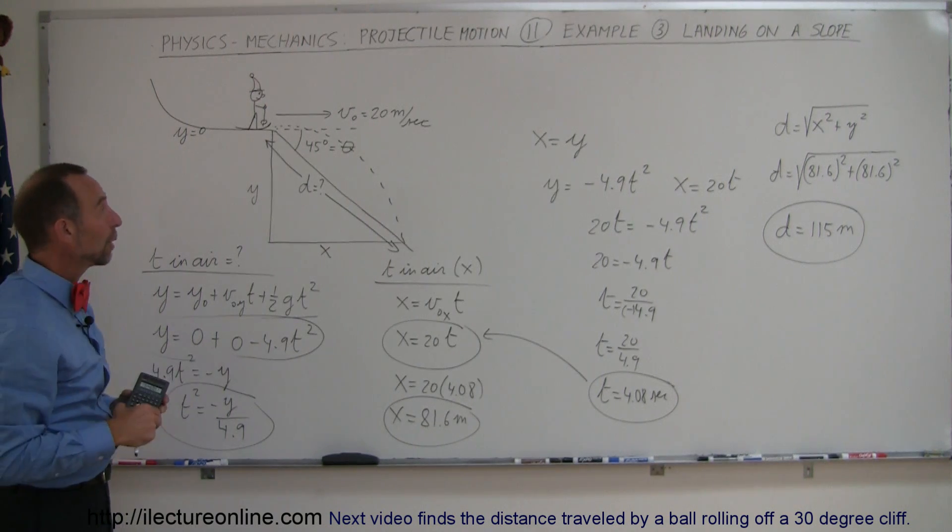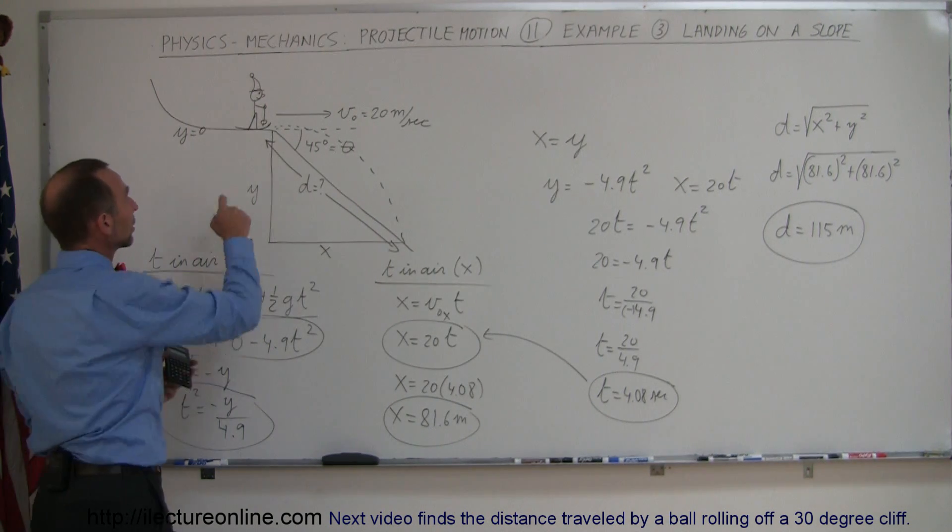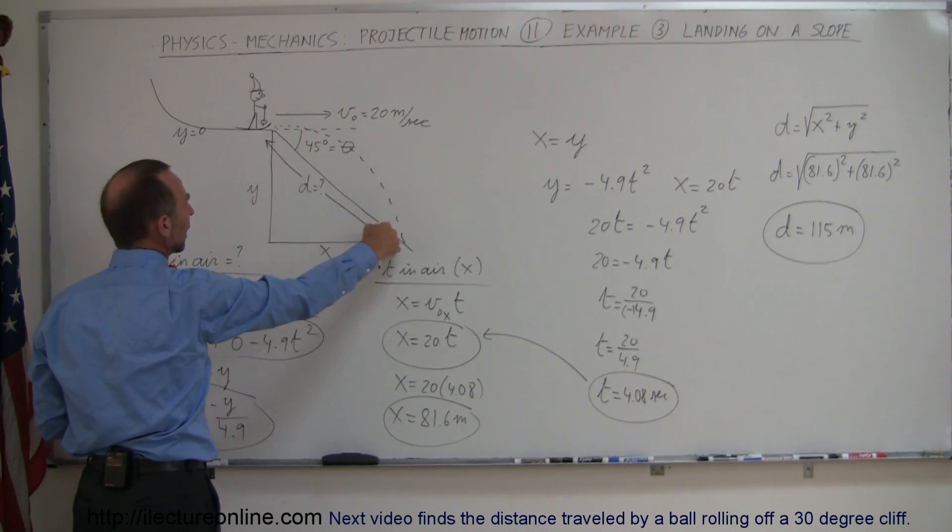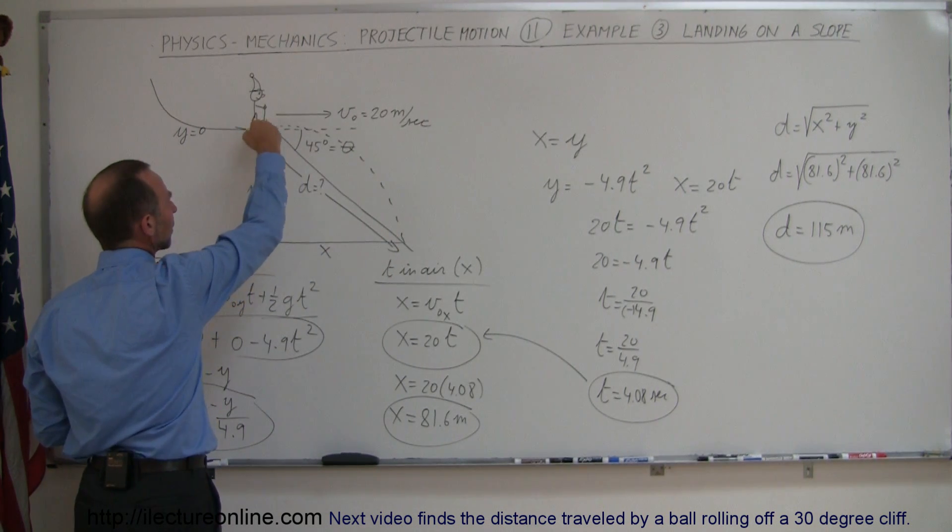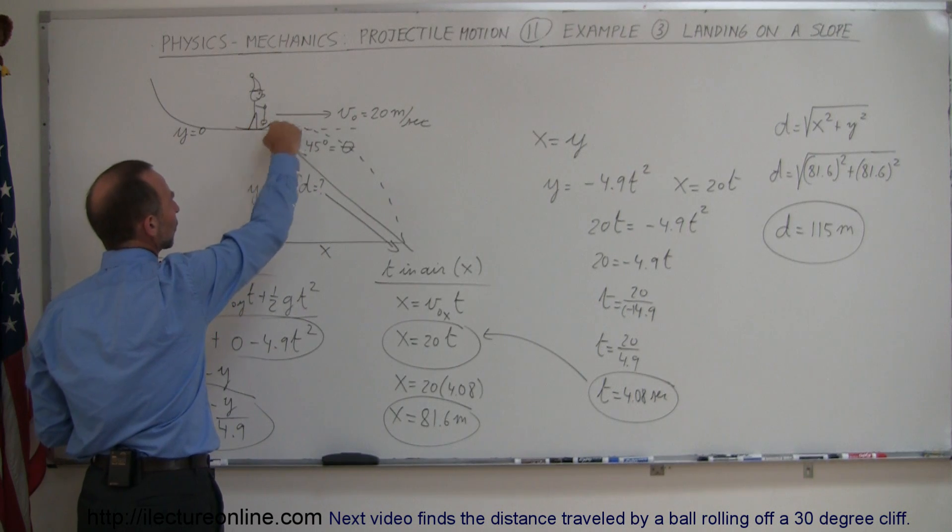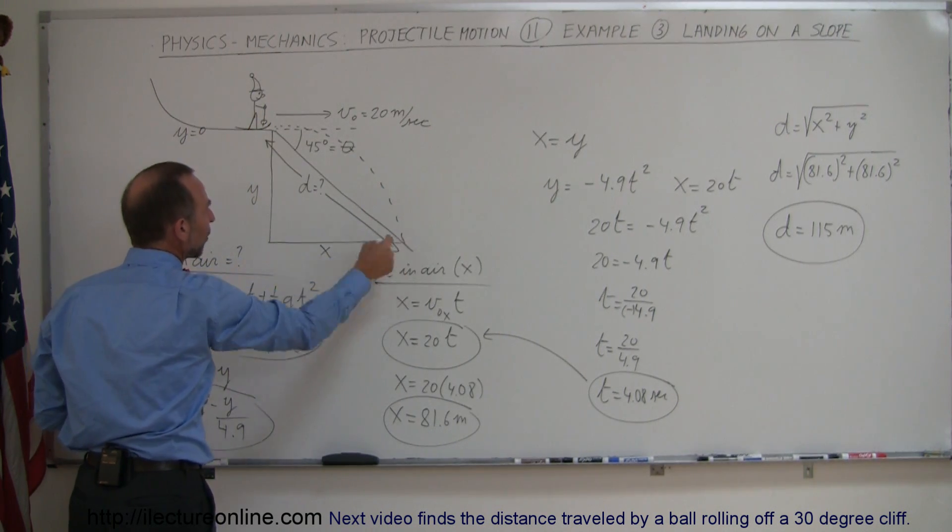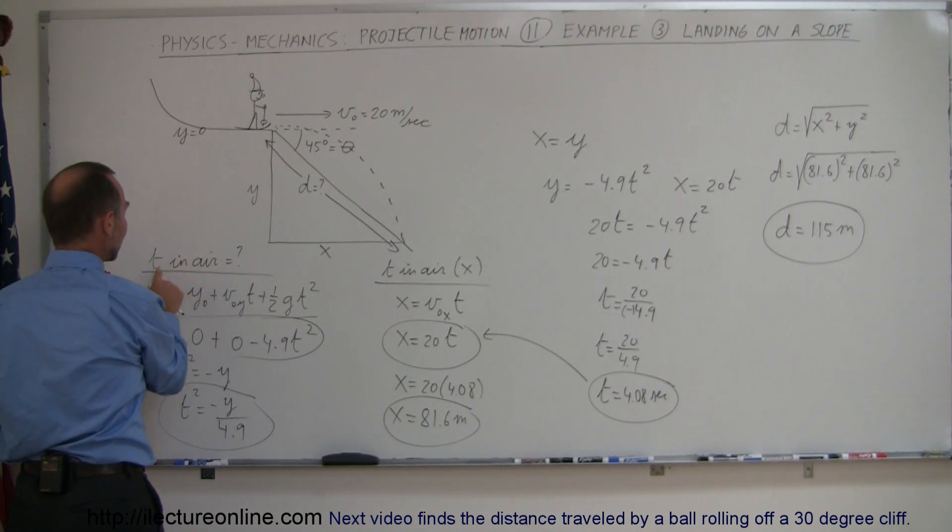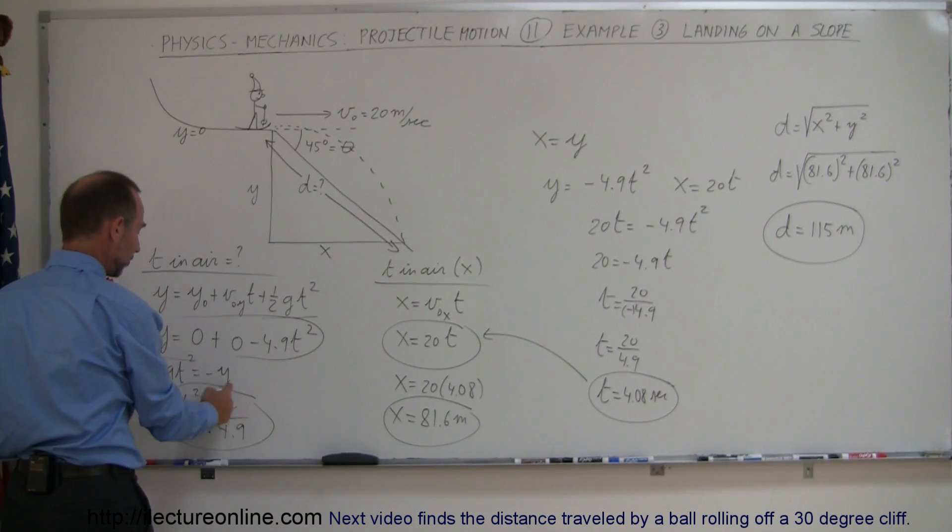Again, let's go ahead and review what we just did. A skier comes down, reaches the speed of 20 meters per second, comes to an incline of 45 degrees downward, so it's going to go airborne, and hit the slope somewhere further down. We start with the concept that we're going to find time in the air, but right away we find ourselves in trouble, because we don't know what y is.